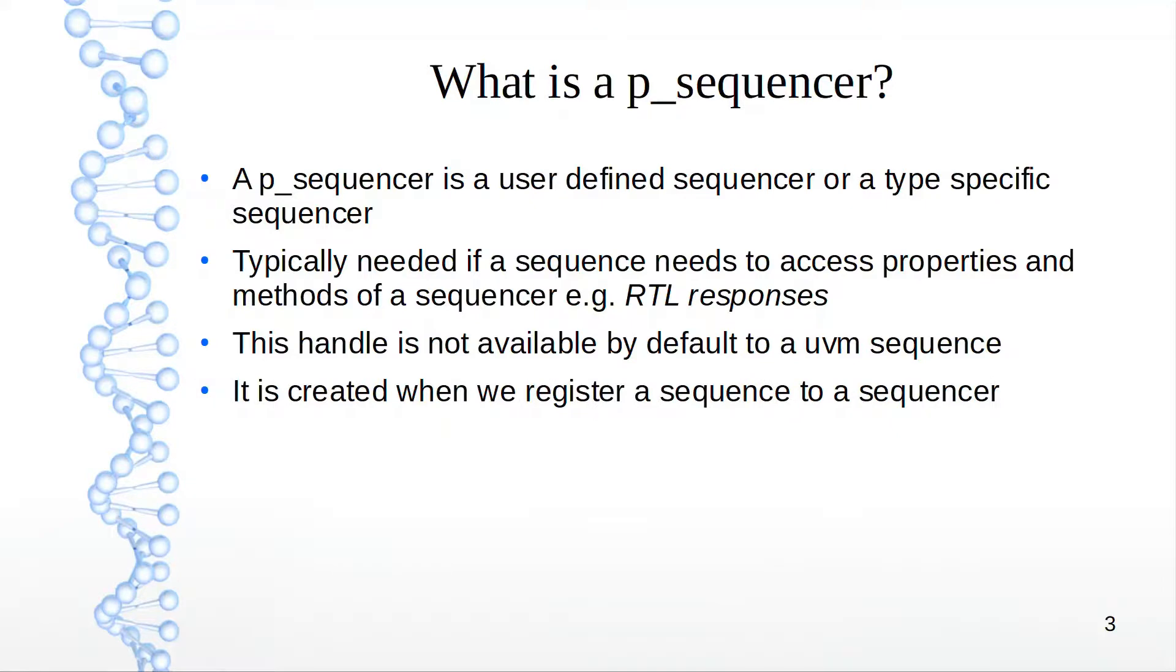The main distinction between this and the m_sequencer is that it's not available by default to a UVM sequence. It is created when you register a sequence to a sequencer. The macro used is uvm_declare_p_sequencer, which you declare within the UVM sequence.